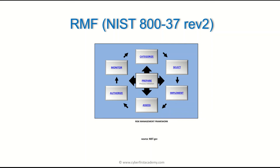After implementing those security controls, an assessor assesses them to make sure everything was done correctly. They go by policy documents and NIST 800-53A, reviewing your security controls to see if they're NIST-compliant and meet your organization's mandates. They let you know if you passed or failed. For the things that failed, you as the ISO must come up with a plan of action to fix them.